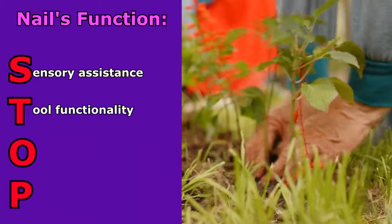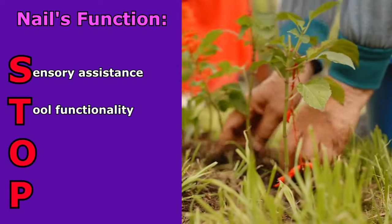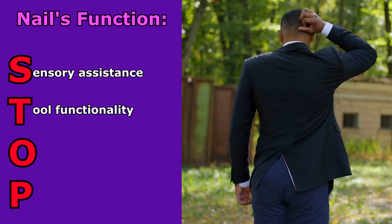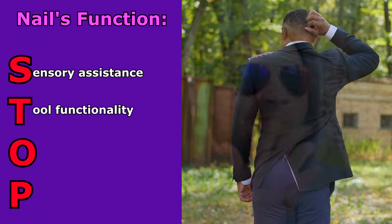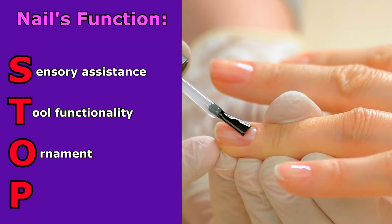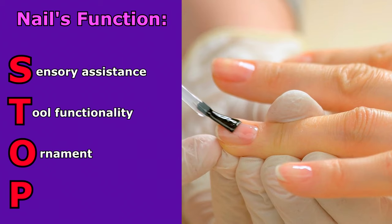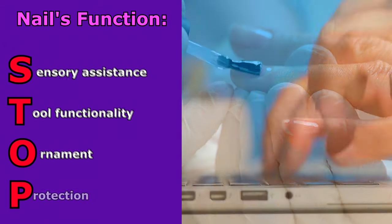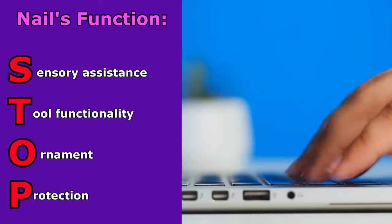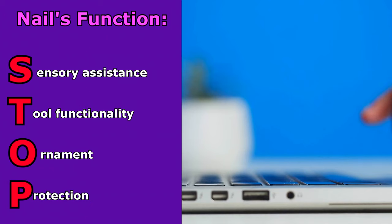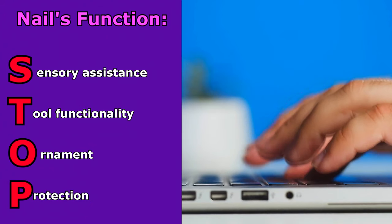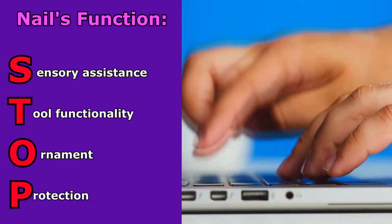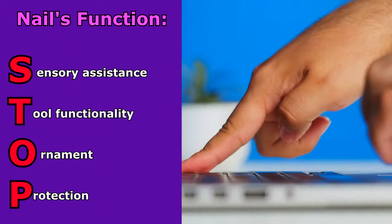Our nails actually provide input for the nerves in the underlying skin tissue. T is for tool functionality. Our nails allow us to do things such as dig around, scratch the skin, grasp objects, or even pick your nose — you know you've done it before, don't lie. O stands for ornament; nails can act as a beauty accessory in many cultures. And P stands for protection: our nails protect and support the distal ends of our digits as we use them for various tasks.